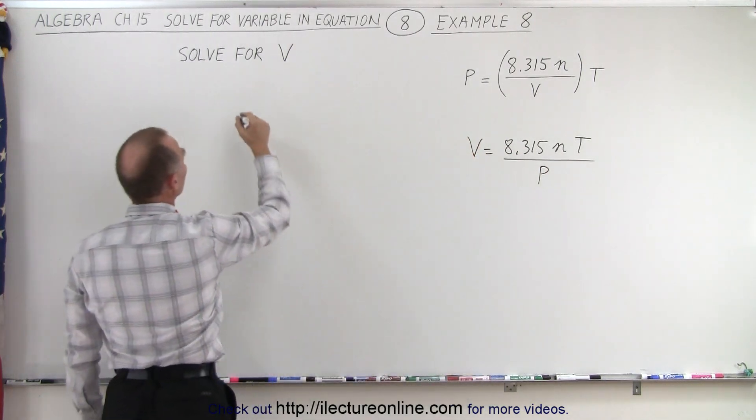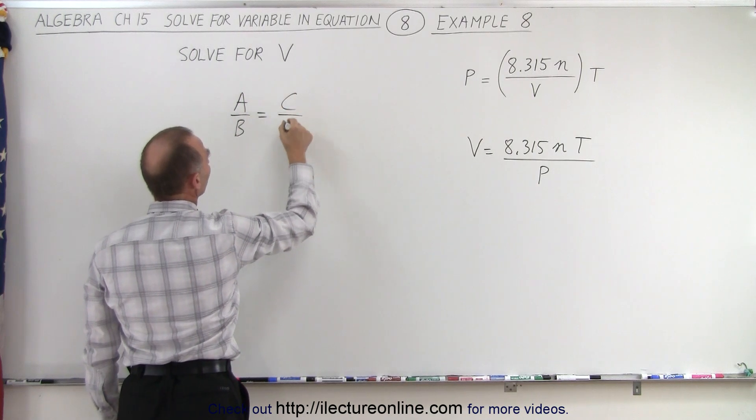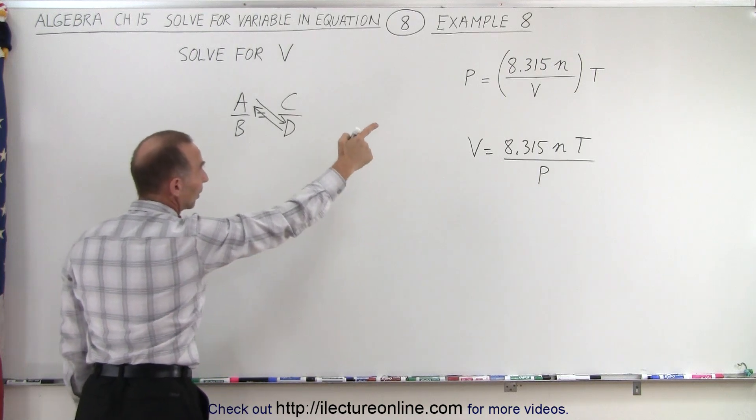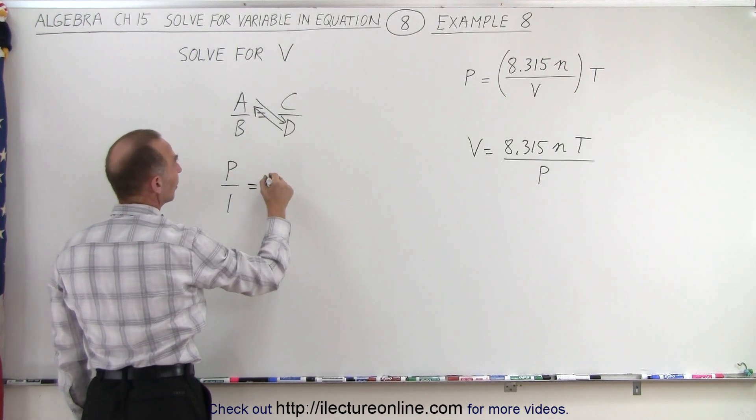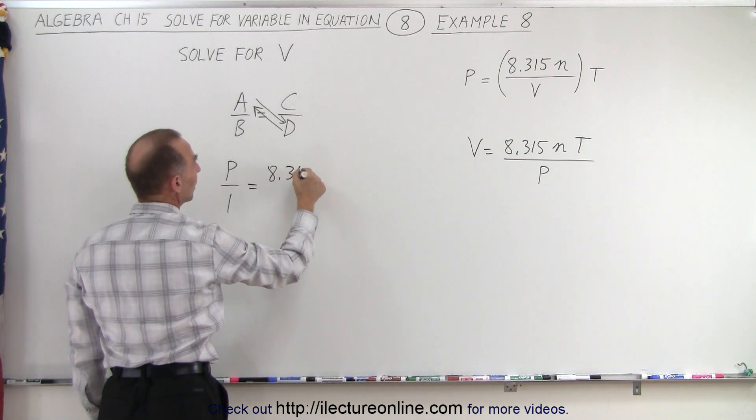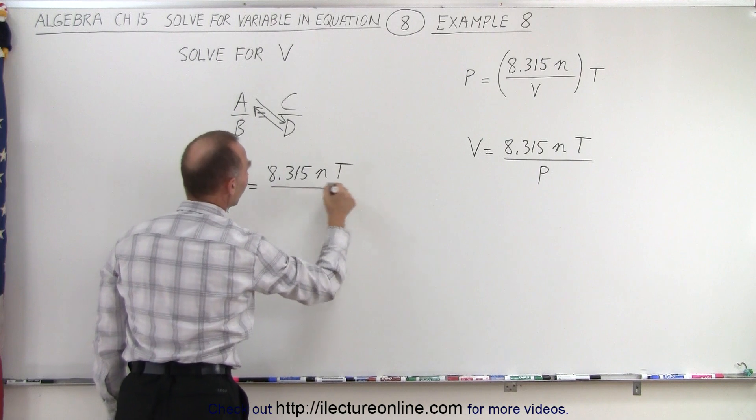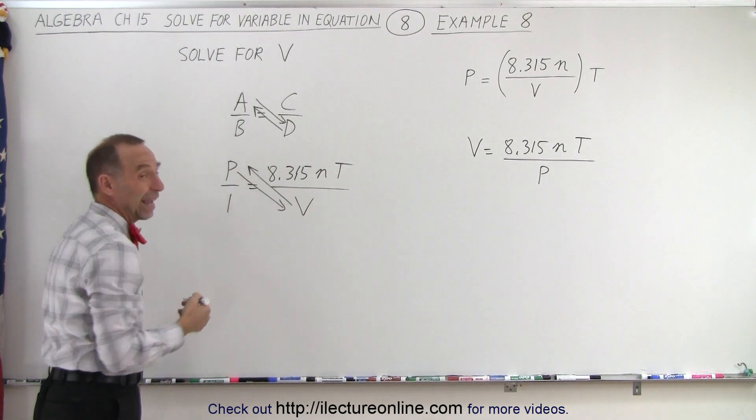Essentially, again, we're using the concept of a over b is equal to c over d, where the d can move up and the a can move down. And in that case, if we want to rewrite that problem, we can write it as p over 1 is equal to 8.315n times t all over v. And again, all we did was move the v up here and the p down there.